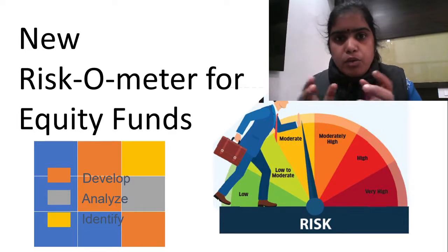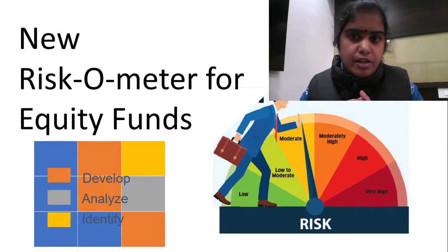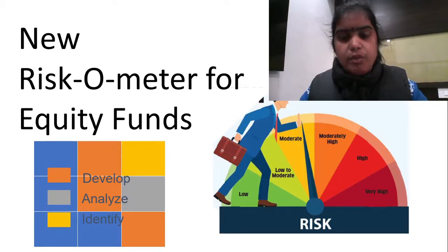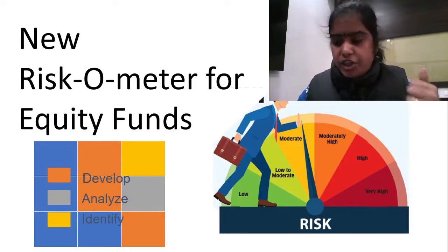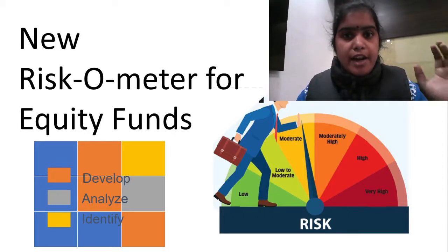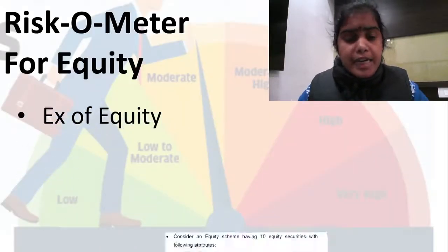Once we are able to correlate things in a proper way, we will be able to take decisions in the right direction. That is the motto of BSC BF NCB, because they took this initiative and are bringing such sessions for you. In the last session we understood the methodology and basic operations behind the riskometer, and today with one example we will try to see how a riskometer works for equity funds.